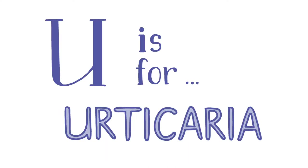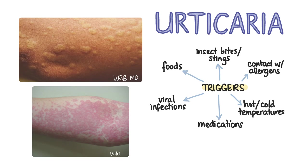U is for urticaria. The typical lesion, called a wheal, is a central itchy white papule or plaque that is raised due to swelling of the epidermis of the skin, surrounded by erythema. Urticaria occurs due to activation of mast cells in the skin, resulting in release of histamine and other inflammatory mediators. This causes leakage of fluid from capillaries, causing localized oedema and vasodilation which results in the erythematous flare. Triggers may include foods, insect bites, stings, viral infections, medications, hot or cold temperatures, and contact with allergens like latex or chemicals.